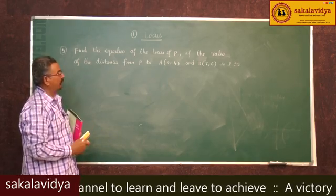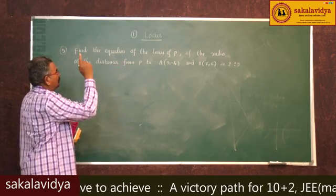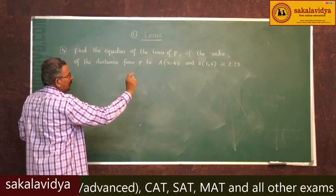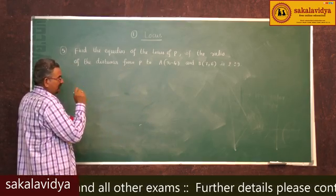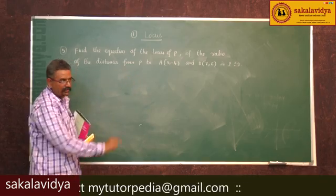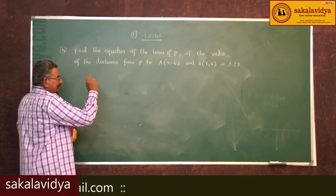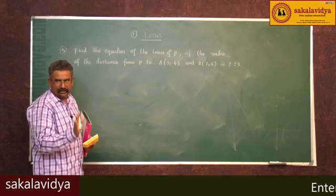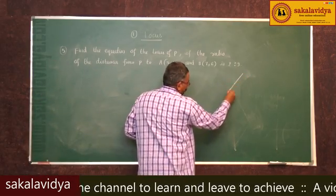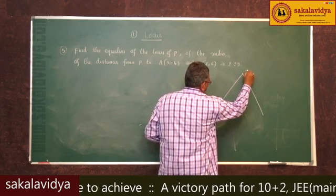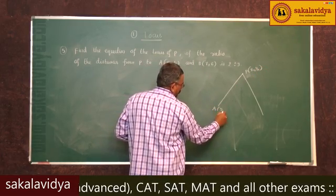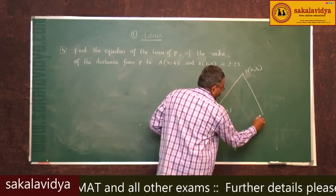Let us find out the equation of the locus of P, if the ratio of the distances from P to A and B is 2:3. That means the distance from P to A and distance from P to B are in the ratio 2:3. Satisfying this condition, we have to find the equation of the locus of P. Let us draw a figure: P is (x1, y1), A is (5, -4), B is (7, 6).